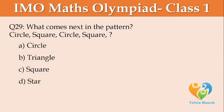What comes next in the pattern? Circle, square, circle, square, ___. A: circle, B: triangle, C: square, D: star.